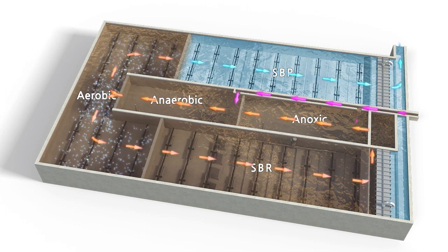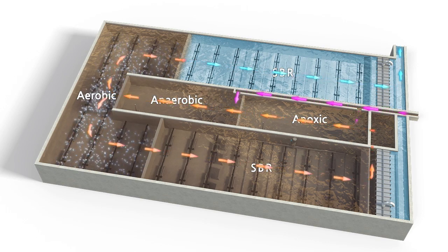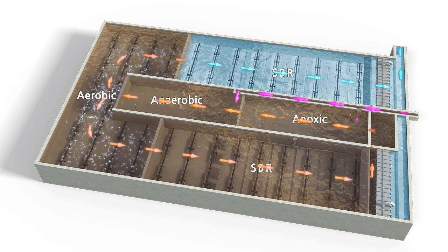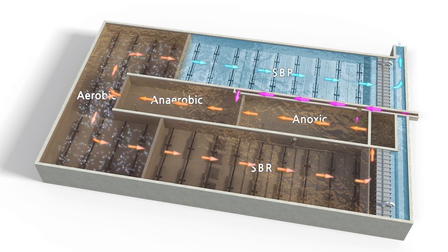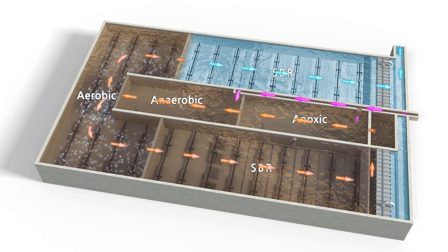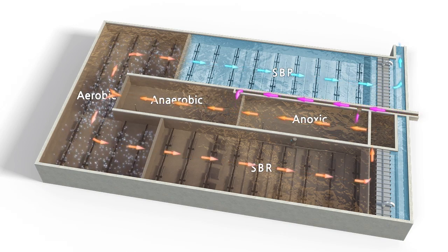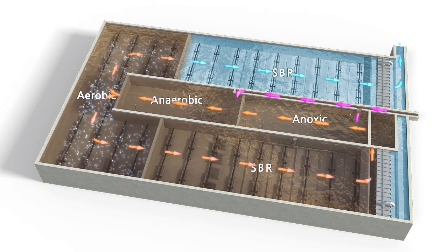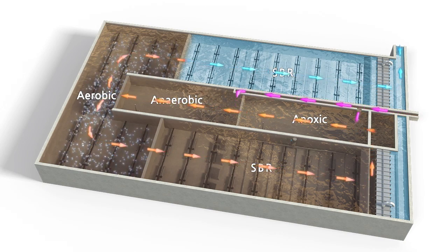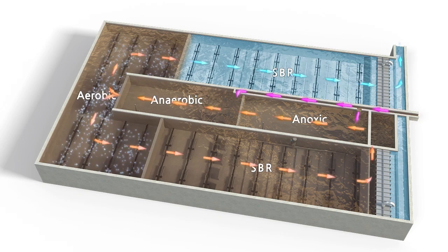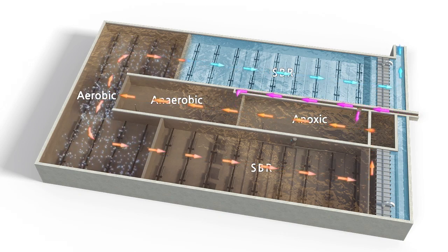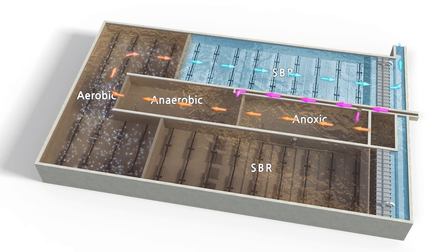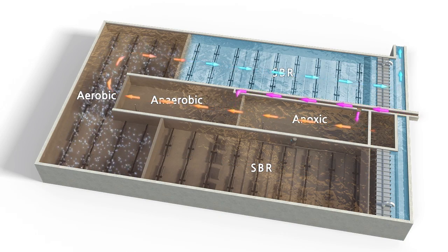Both SBR cells repeat alternately the discharge of treated water and reaction processes for 2 hours per cycle. After the solid-liquid separation is over in the SBR cell, the supernatant is discharged by the decanting system, and the settled excess sludge at the bottom of the cell is driven to the sludge treatment process at the desired time. At the same time, the other SBR cell proceeds with the reaction process.